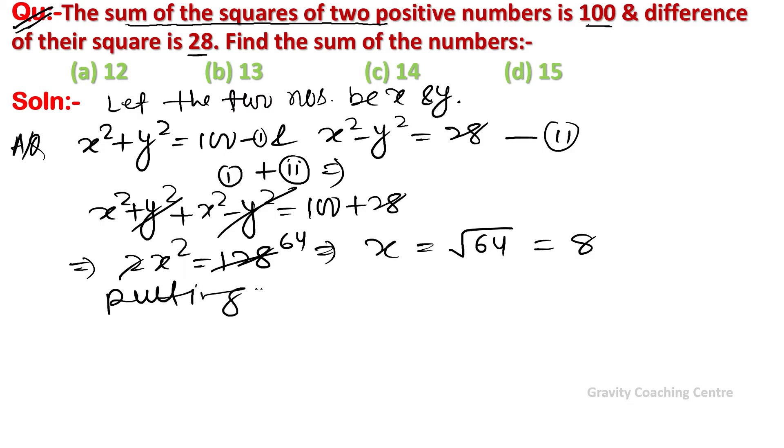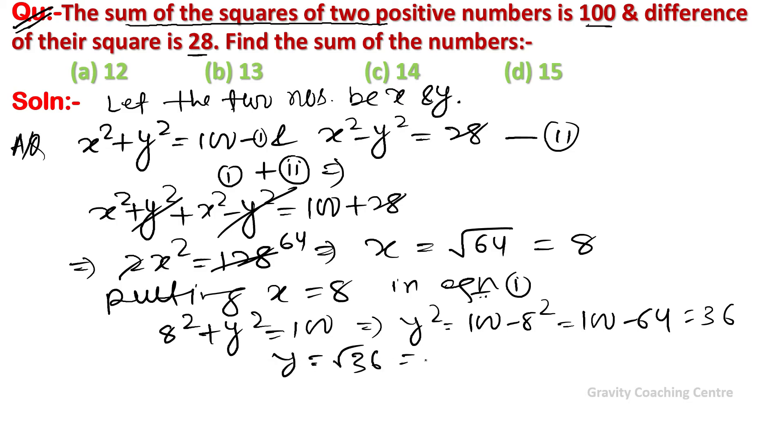Now putting x equal to 8 in equation first, so we get 8² plus y² equal to 100. This implies that y² equal to 100 minus 8², equal to 36. So y equal to root 36, equal to 6.